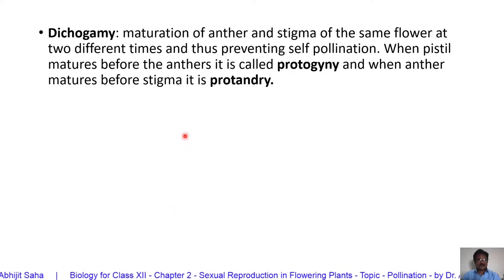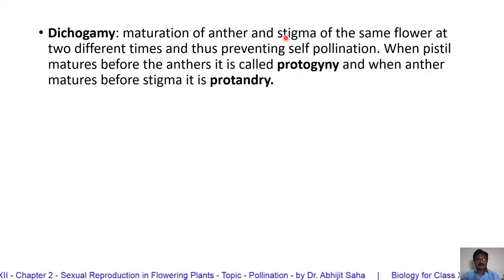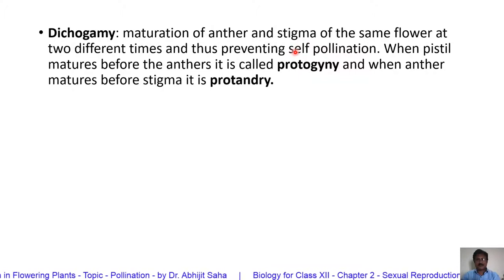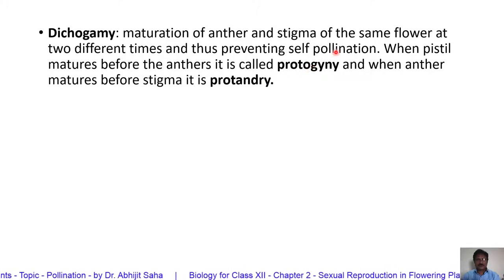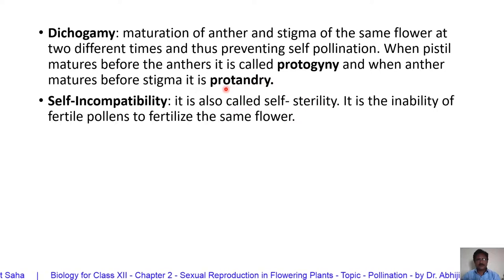There is another type called dichogamy. Dichogamy means the time of maturation of the anther and the stigma differs. When the anther matures first and the stigma matures later, or vice versa — when both do not mature at the same time — self-pollination and fertilization is not possible. When the pistil matures before the anther, it is called protogyny. When the anther matures before the stigma, it is called protandry.